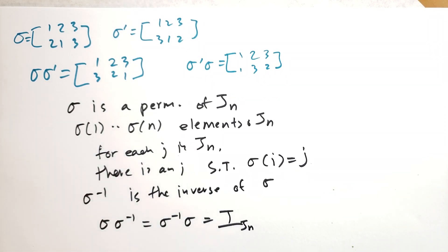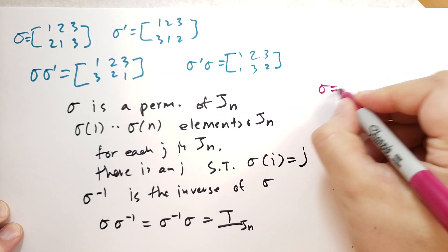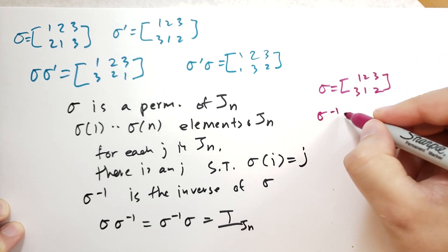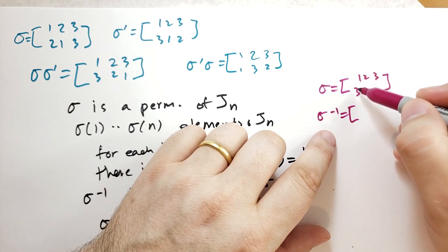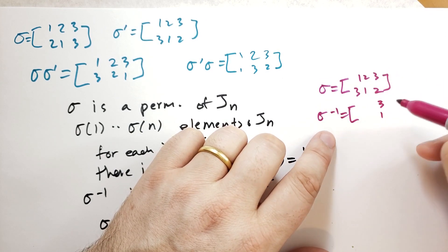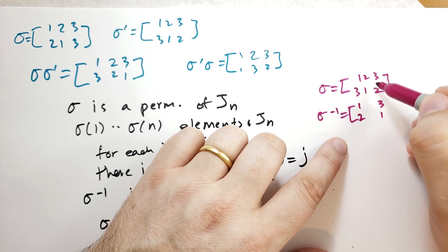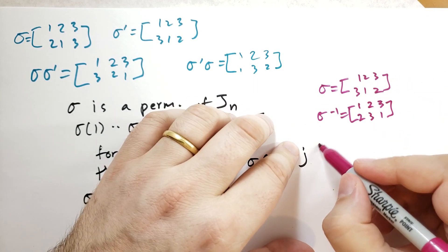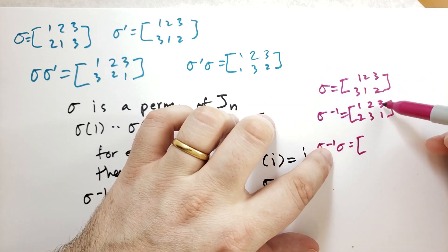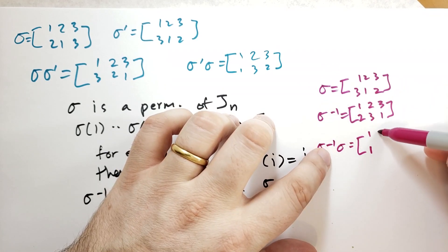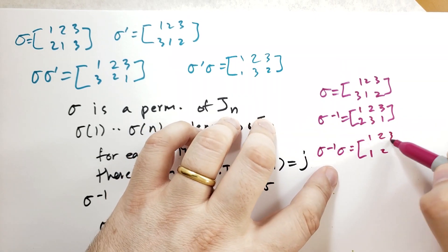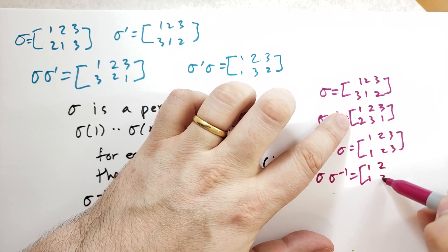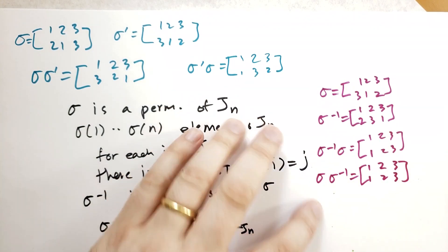Let's do an example of finding the inverse. Sigma is defined as [1, 2, 3] → [3, 1, 2]. We can visually figure out the inverse: 1 goes to 3, so 3 needs to go back to 1. 2 goes to 1, so 1 needs to go back to 2. 3 goes to 2, so 2 needs to go to 3. If we verify sigma⁻¹ composed with sigma: 1→3→1, 2→1→2, 3→2→3. And checking sigma composed with sigma⁻¹: 1→2→1... wait, let me redo — 1→2 then 2→1, so 1→1; 2→3 then 3→2, so 2→2; 3→1 then 1→3, so 3→3. Those two are indeed inverses of each other.